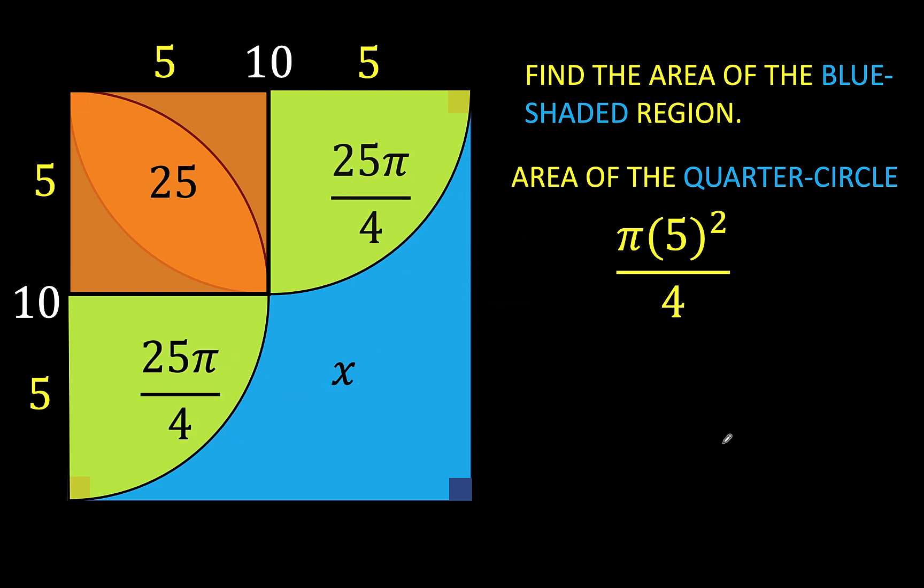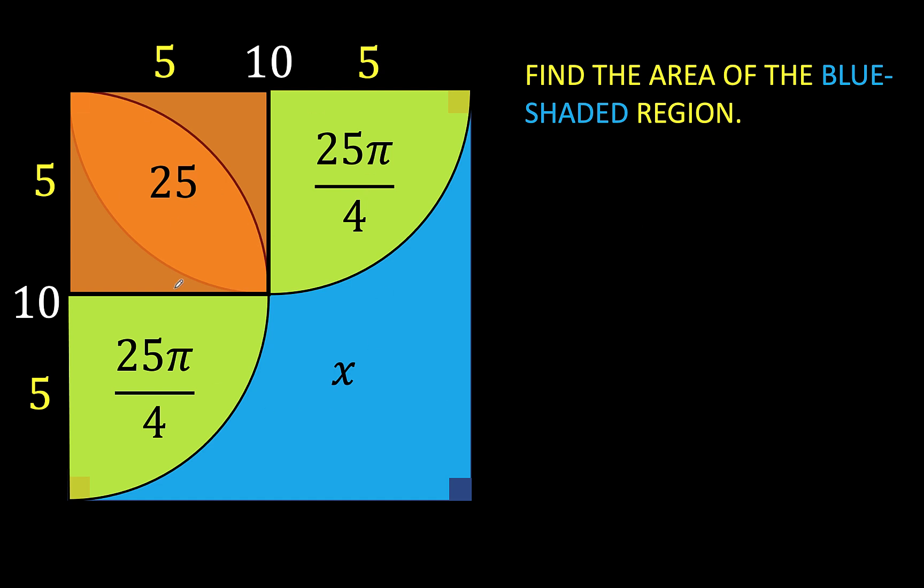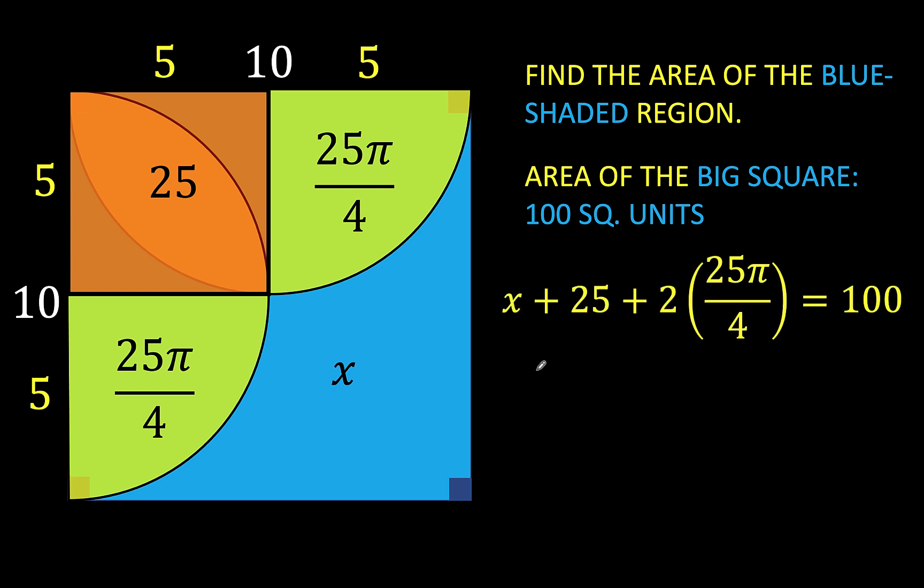Now we know that the area of the original 10 by 10 square is 100 square units. Then the sum of these four areas would be equal to this 100 square units, and so we now have this equation: the area of the blue shaded region which is x, plus the area of the square which is 25, plus the areas of the two quarter circles, equals 100 square units.